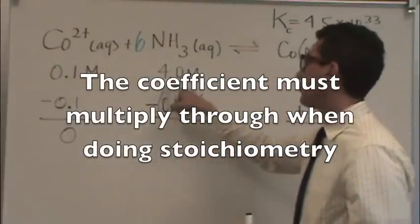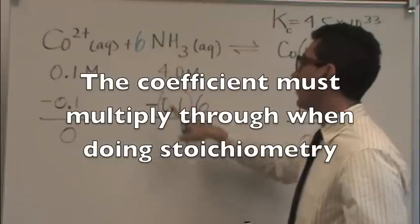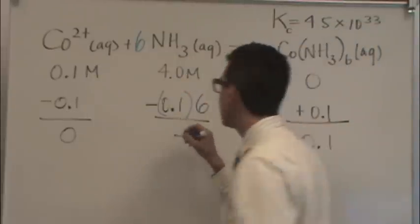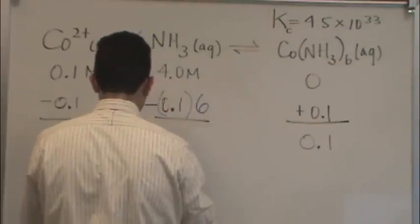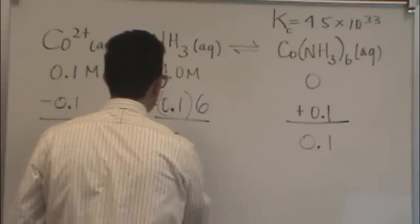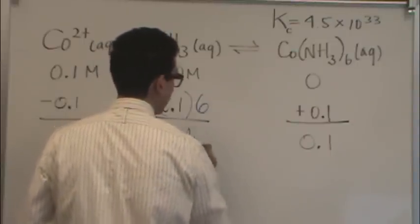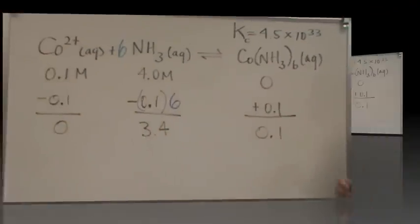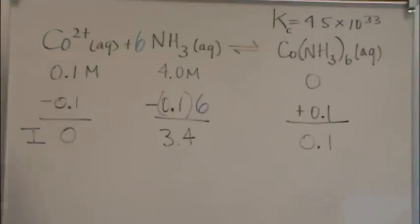So in that case, instead of going 4 minus 0.1, I'm going to go 4 minus 0.6. So that's going to end up being 3.4. Now I'm able to start my ICE table, which would be I, C, and E.